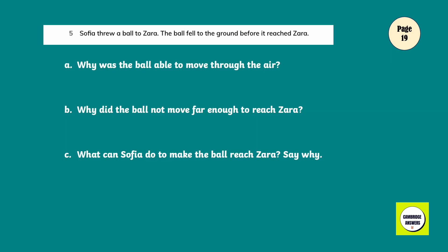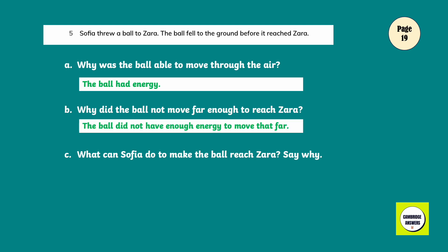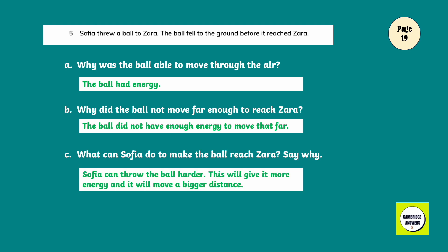Sofya threw a ball to Zara. The ball fell to the ground before it reached Zara. Why was the ball able to move through the air? The ball had energy. Why did the ball not move far enough to reach Zara? The ball did not have enough energy to move that far. What can Sofya do to make the ball reach Zara? Say why. Sofya can throw the ball harder. This will give it more energy and it will move a bigger distance.